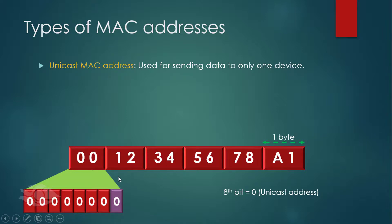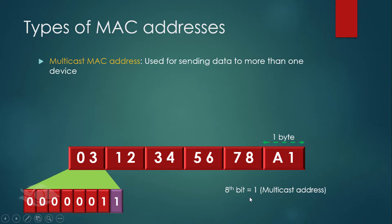If we break down the first byte, we'll have 8 bits. Of all these bits, only the last bit affects how data is forwarded. If the bit at position 8 is a 0, data sent to this destination MAC address will be received and processed by only one device. These types of MAC addresses are called unicast MAC addresses and are used on network adapters. But if the bit is a 1, data sent to this destination MAC address is received and processed by multiple devices — hence they are called multicast MAC addresses.